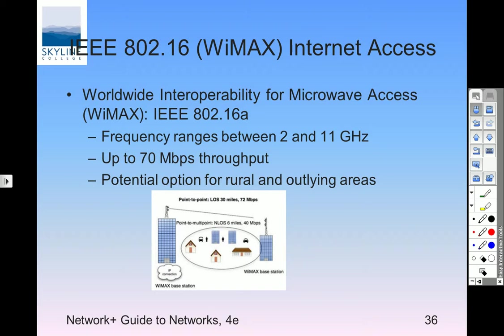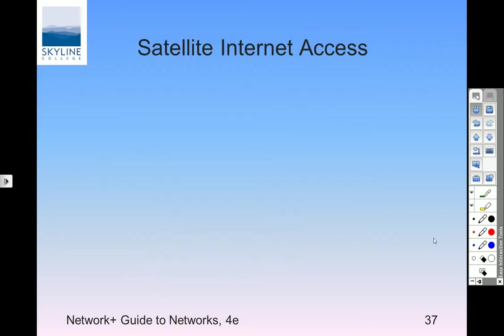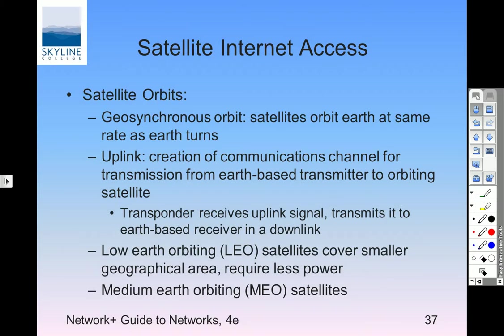WiMAX — 802.16 — is kind of interesting and also expensive. There is a wireless provider here, B2X, but they don't advertise the speeds WiMAX has — up to 70 megabits per second. The 72 megabits here, it says line-of-sight 30 miles, but that's for a point-to-point connection. Point-to-multipoint, say 6 miles and 40 megabits. It's like everything else: you can go really fast and far point-to-point, but if you want to connect eight sites to point-to-multipoint, you get less distance and lower bandwidth. You always get the lowest common denominator.